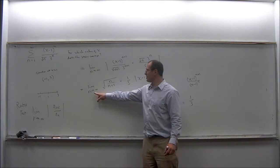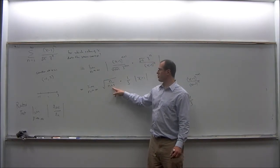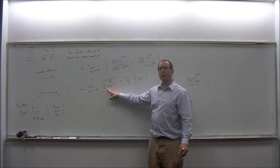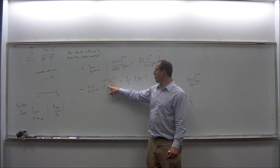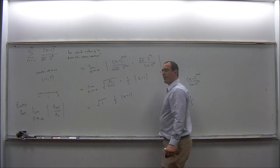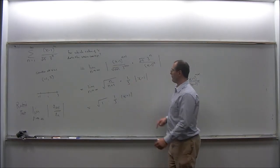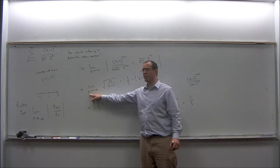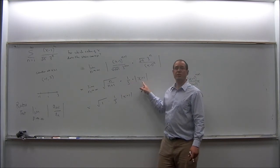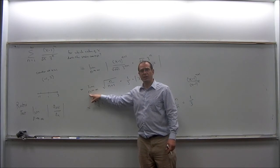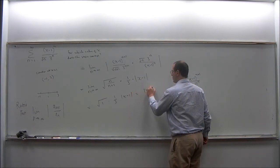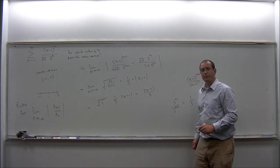Now computing the limit as n goes to infinity: the quantity under the square root goes to 1, because we have n to the first power over n to the first power, and the ratio of lead coefficients is 1 over 1. So the limit is the square root of 1 times 1 third times the absolute value of x minus 1. The second and third factors do not contain any n's, so they are constant. This gives us the limit equals the absolute value of x minus 1 over 3.